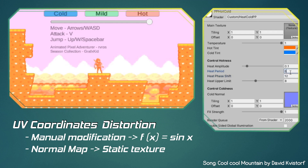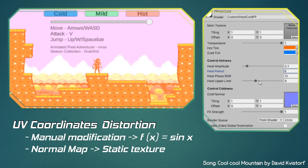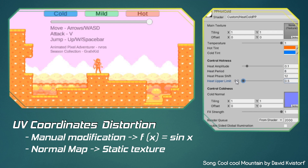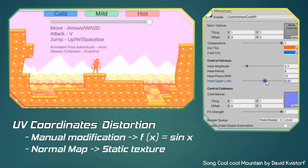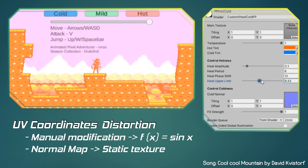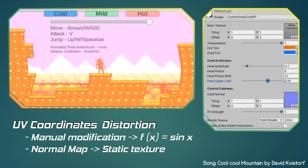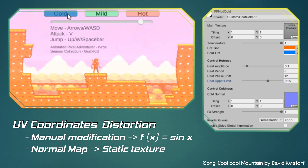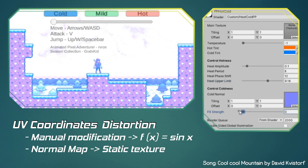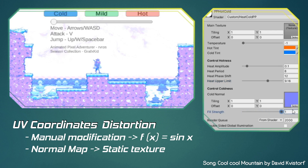Each one of these methods has pros and cons. For example, using a function is more flexible because you are manually changing the UVs. However, better effects require more advanced and complex functions, while using a normal map is overall easier at the cost of flexibility because we are using a predefined static texture. The good news is that we can use a combination of the first method with the second to create a powerful shader effect, just like the one you are seeing on the screen.